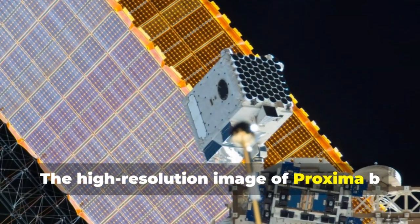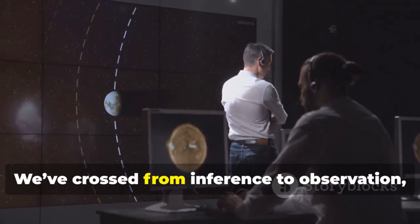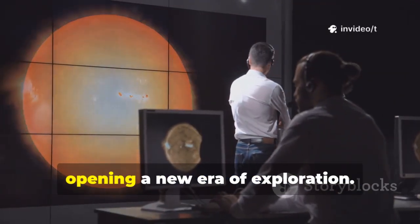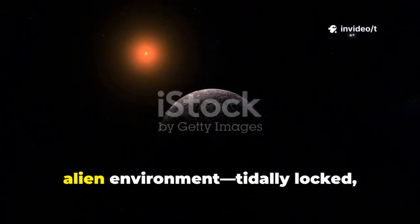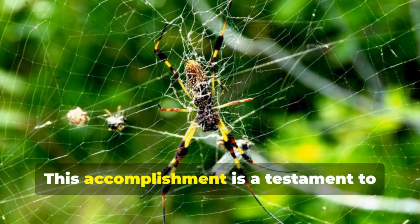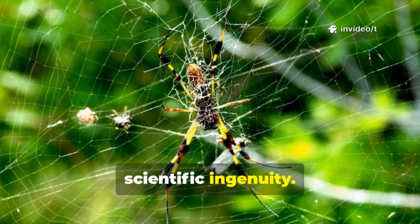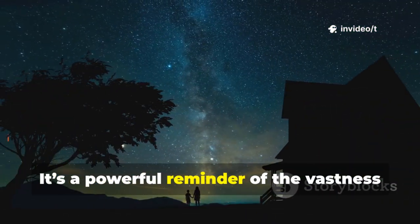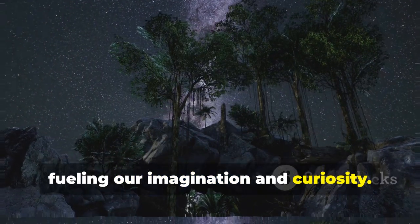The high-resolution image of Proxima b moves it from a data point to a visible world. We've crossed from inference to observation, opening a new era of exploration. The image hints at a complex alien environment, tidally locked with bright and dark regions shaped by its red dwarf star. This accomplishment is a testament to decades of technological progress and scientific ingenuity. It's a powerful reminder of the vastness and diversity of the cosmos, fueling our imagination and curiosity.